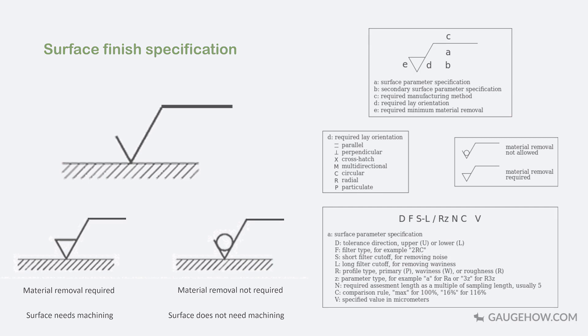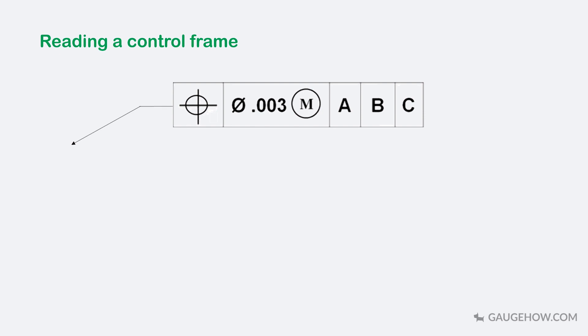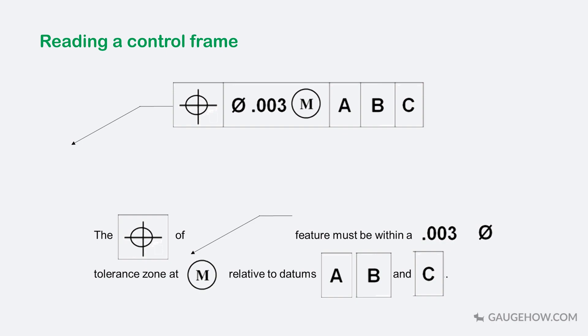Now, let us try to read a control frame. Let us consider this control frame. The arrow specifies the part or surface which the control frame is describing. This is the position symbol, so it tells us to focus the position of the feature. This shows that the tolerance value of the diameter is 0.003 units and this symbol specifies the maximum material condition. The three boxes with labels A, B and Z shows primary, secondary and tertiary datums. The feature specifications will be relative to these datums. Therefore, this control frame specifies that the position of the feature must be within a 0.003 diametrical tolerance zone at maximum material condition relative to datums A, B and C.